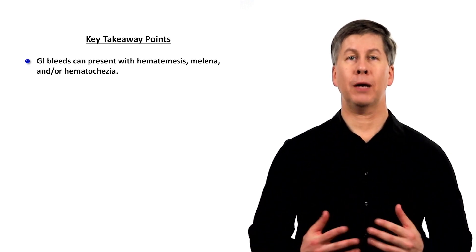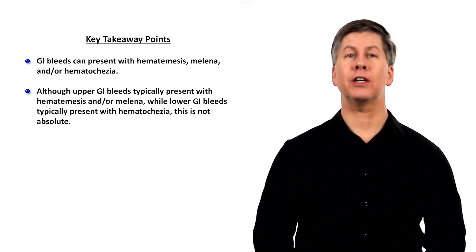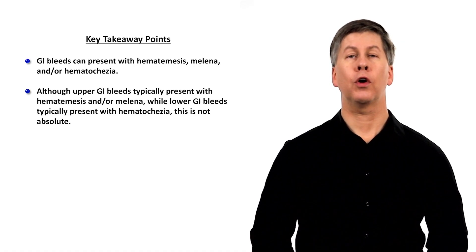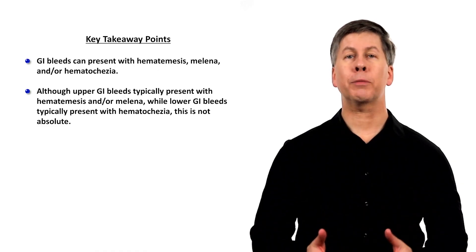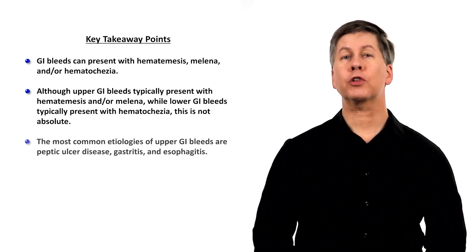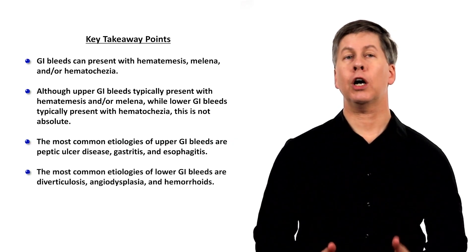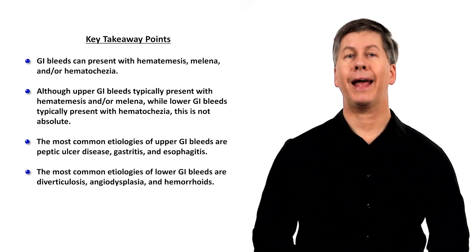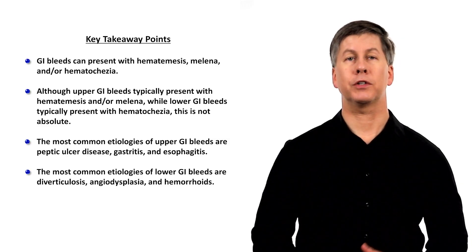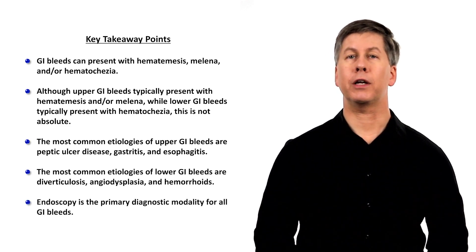Key takeaway points for this topic: GI bleeds can present with hematemesis, melena, and/or hematochezia. Although upper GI bleeds typically present with hematemesis and/or melena while lower GI bleeds typically present with hematochezia, this is not absolute. The most common etiologies of upper GI bleeds are peptic ulcer disease, gastritis, and esophagitis. The most common etiologies of lower GI bleeds are diverticulosis, angiodysplasia, and hemorrhoids. And last, endoscopy is the primary diagnostic modality for all GI bleeds.